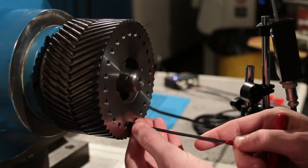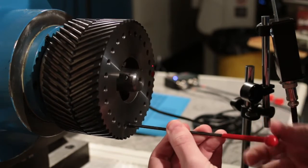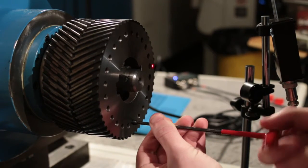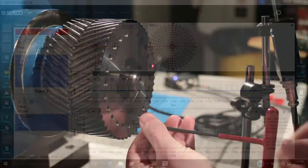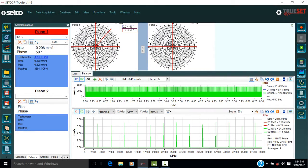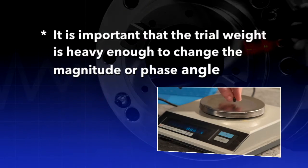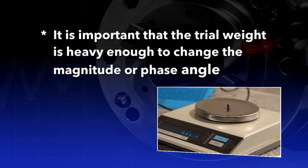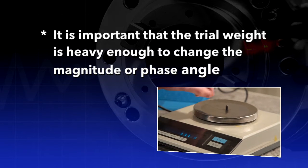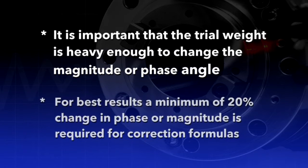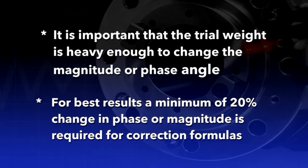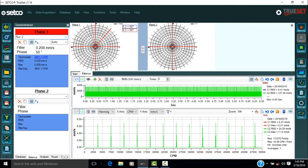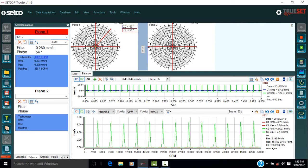Now add or remove a known weight in a known location and take note of the angular location relative to the zero degree point in the polar graph. This is the trial weight. It is important that the trial weight is heavy enough to cause a significant change in either magnitude or phase angle. For the best accuracy, a minimum of a 20% change in either phase or magnitude is required for correction formulas. Press the record button again with the equipment running to get data for calculating the weight required for balancing.